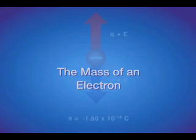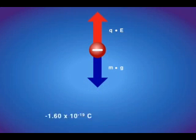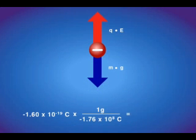From the charge of an electron and the charge-to-mass ratio of an electron determined by Thomson using a cathode ray tube, Millikan was able to calculate the mass of an electron. The mass of an electron, 9.10 times 10 to the negative 28th grams, is an exceedingly small mass.